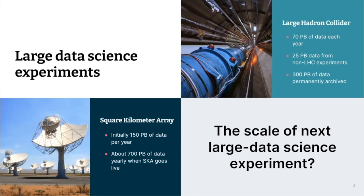Something we have been peripherally involved in is the Square Kilometre Array. The SKA is basically radio telescopes spread across the globe. One set of radio telescopes is based in Australia, studying low-range frequencies; another is being built in South Africa studying mid-range frequencies. This entire array of radio telescopes will act like a single one-kilometre-wide radio telescope.